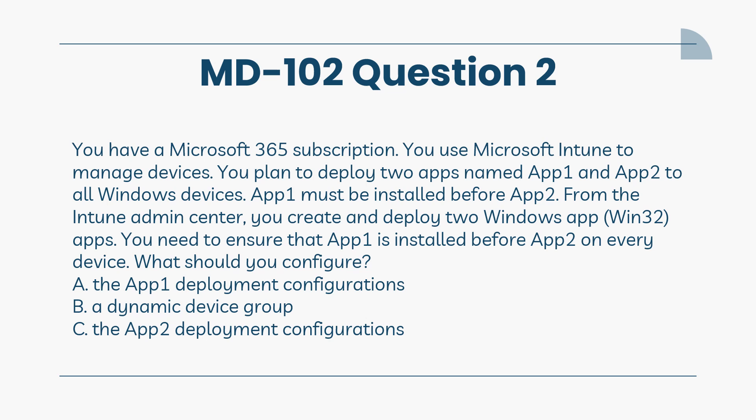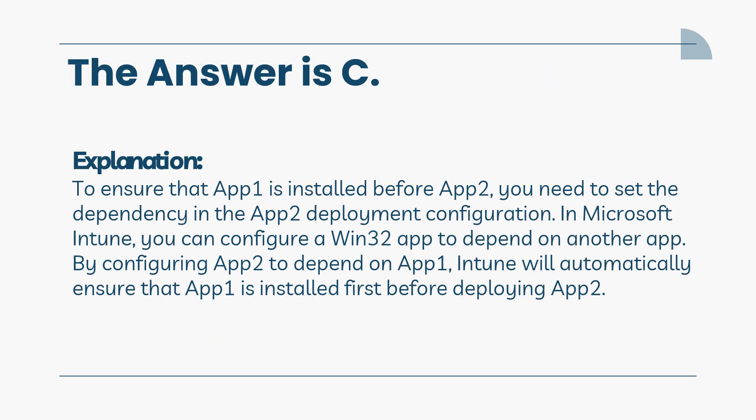A. The App1 deployment configurations. B. A dynamic device group. C. The App2 deployment configurations. The answer is C.